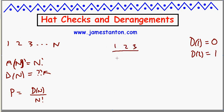For three objects, you do things like, say, 3, 1, 2, or 2, 3, 1. And if you think about it for a little while, that's it. There's only two ways to derange three objects.